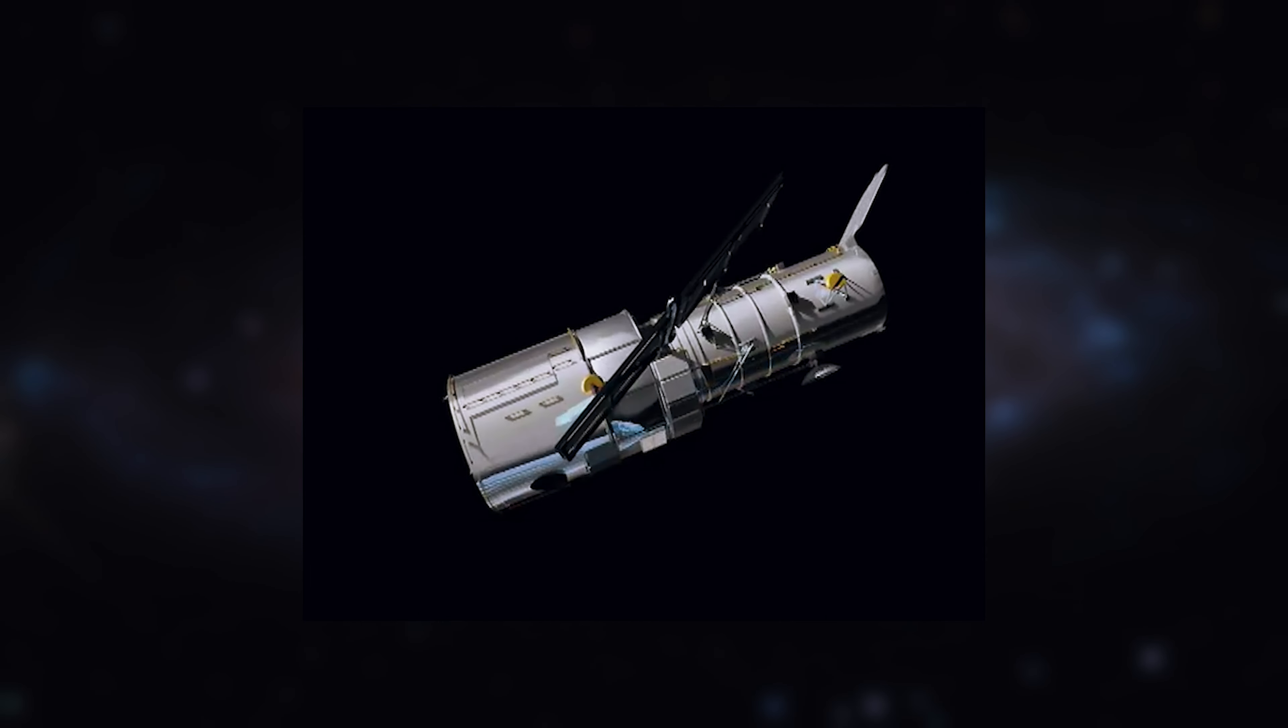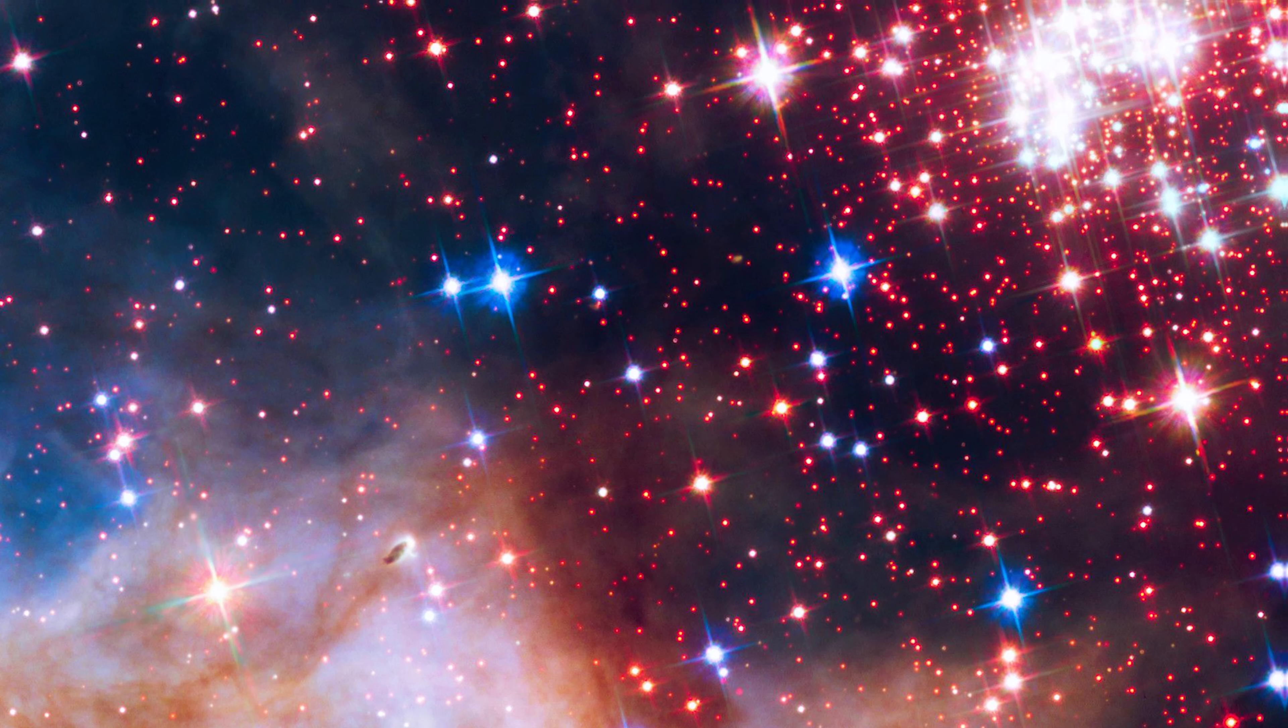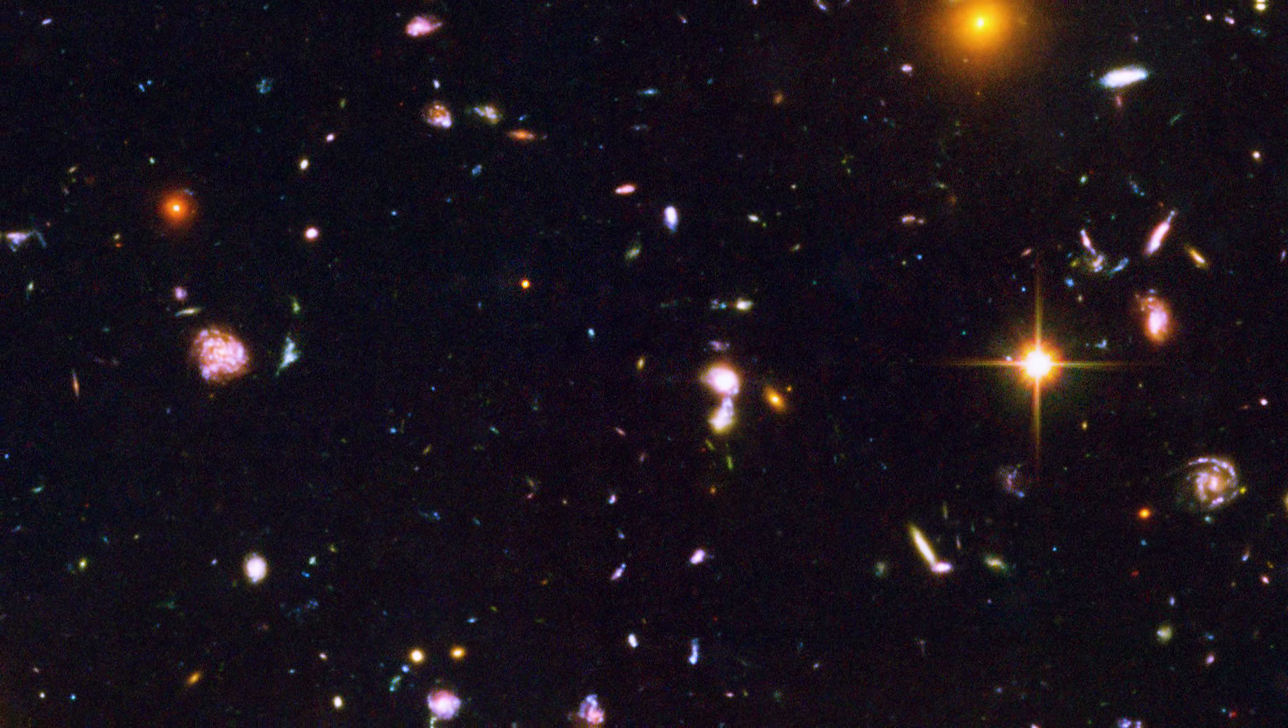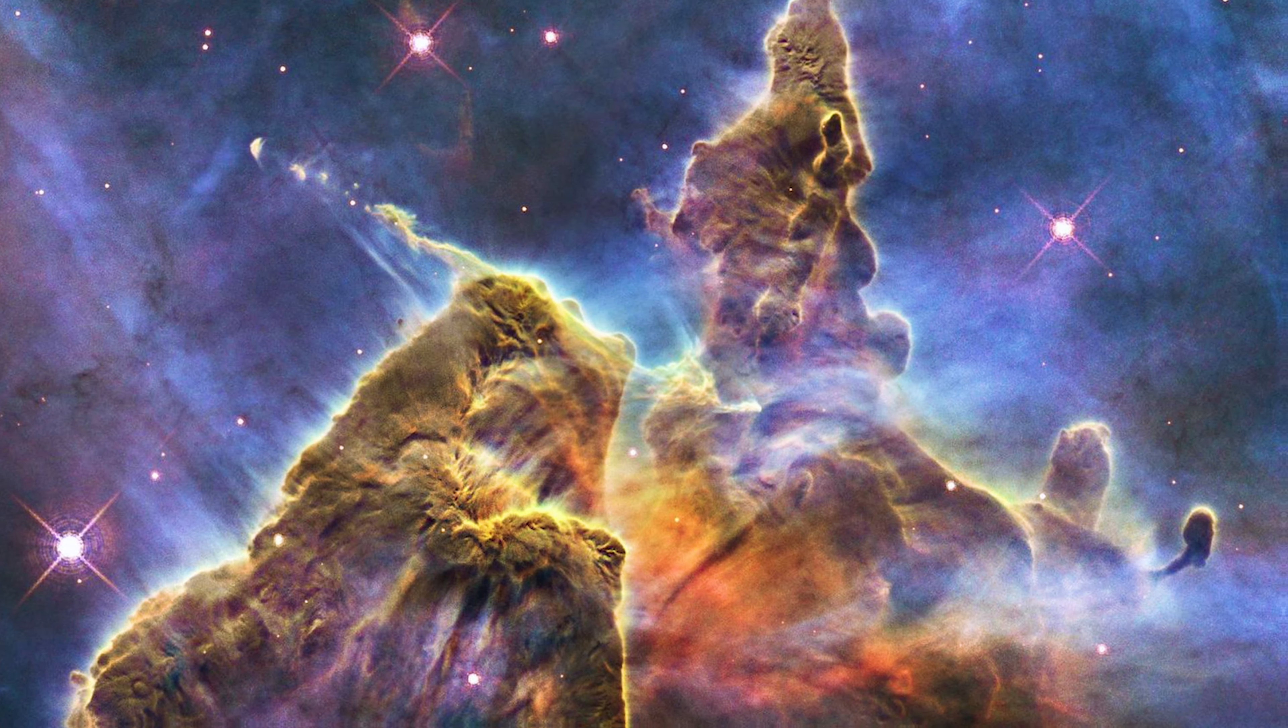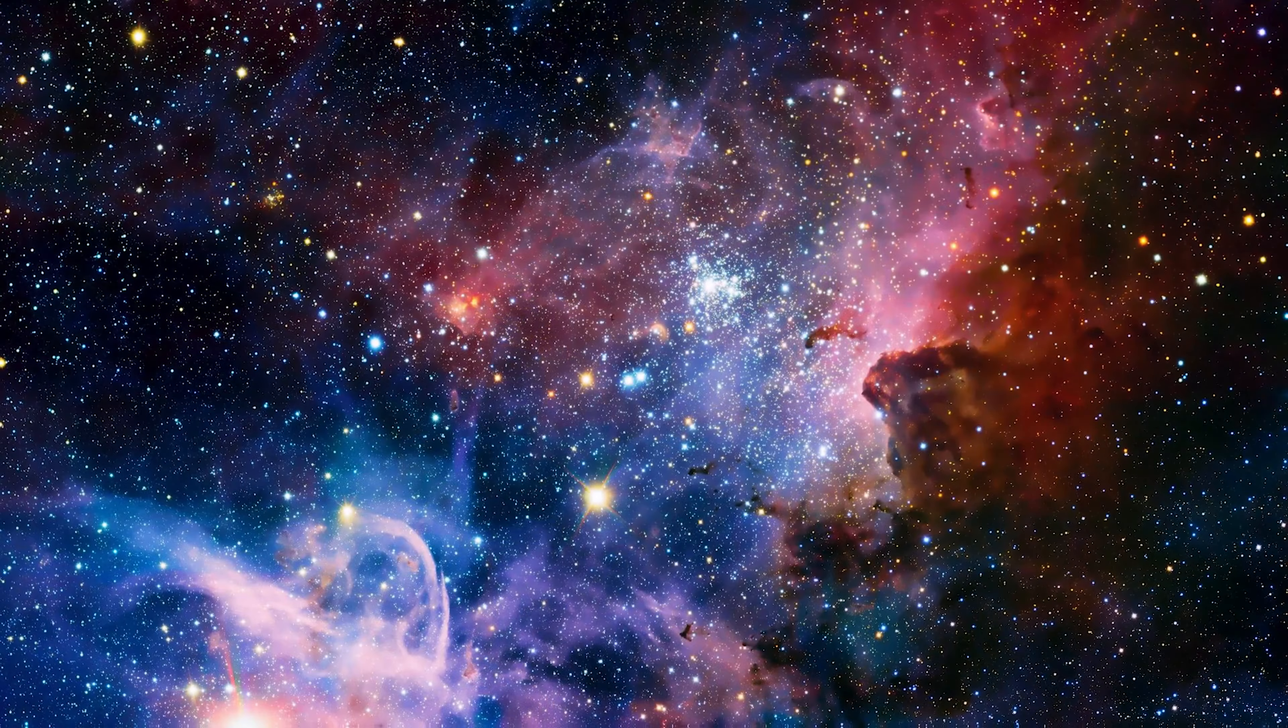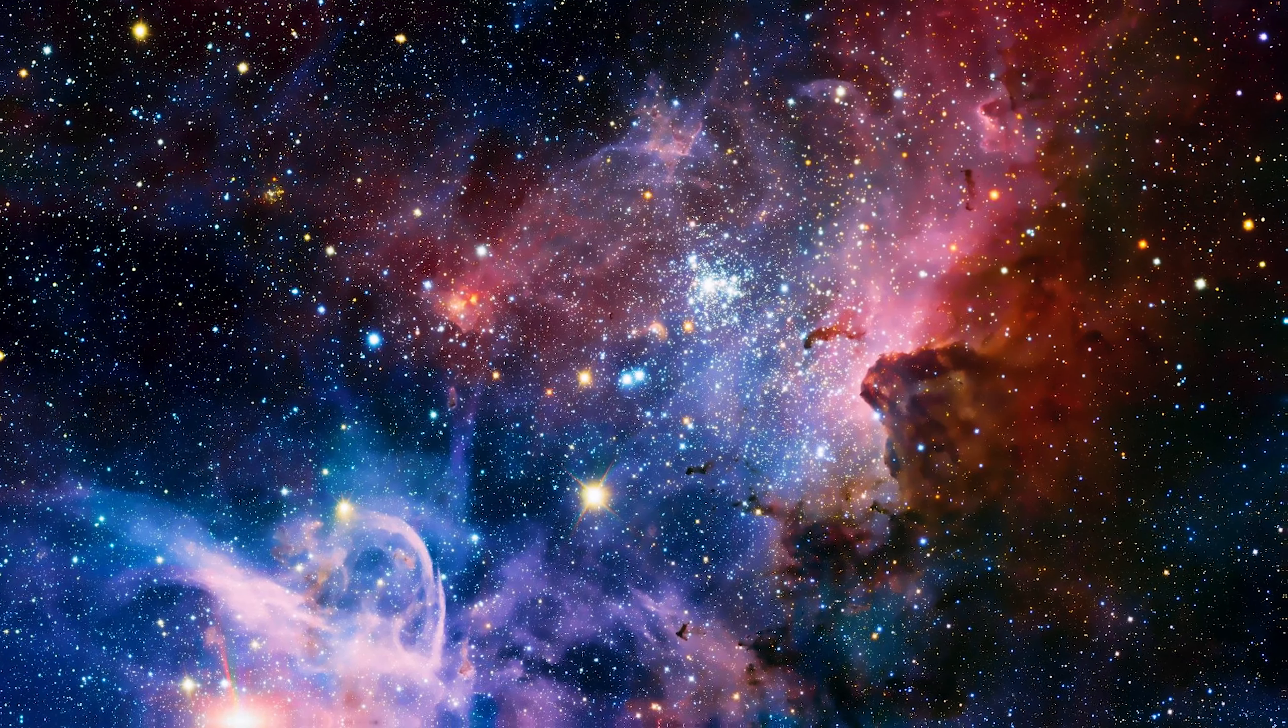Space telescopes were first thought of in 1923, and in the 1970s, NASA and the European Space Agency worked together to pay for and build the Hubble Telescope. It was supposed to be launched in 1983, but technical problems, budget problems, and the Challenger disaster in 1986 slowed down the project.